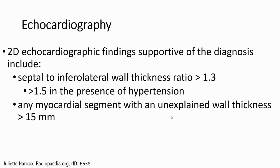Echocardiography: We use 2D echocardiography for diagnosis. Diagnostic criteria include an interventricular septal to inferior lateral wall thickness ratio of 1.3, or more than 1.5 in the presence of hypertension. In cases of hypertension, the ratio needs to be more than 1.5, or any myocardial wall thickness greater than 15 mm is indicative of hypertrophic cardiomyopathy.